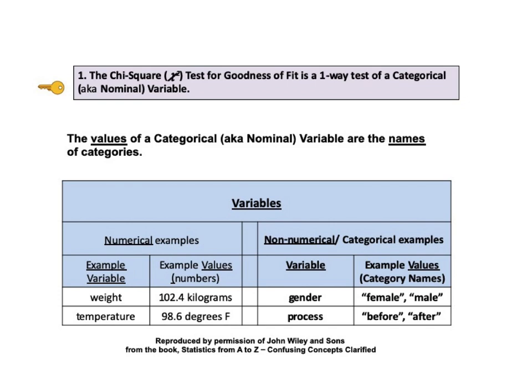Here's another example. Let's say we were working on improving a manufacturing process. Process would be the categorical variable, and we could have two different named processes — the process followed before the improvements and the process after the improvements. So the values of the categorical or nominal variable process would be the two names, before and after. You may wish to pause the video at this point and re-read the table, since this concept can be somewhat confusing.